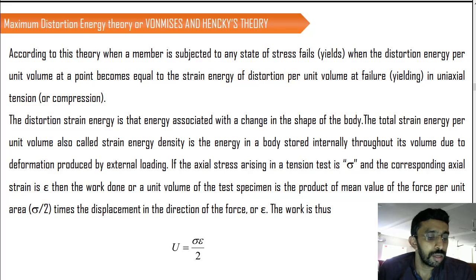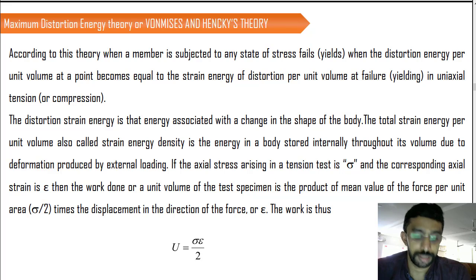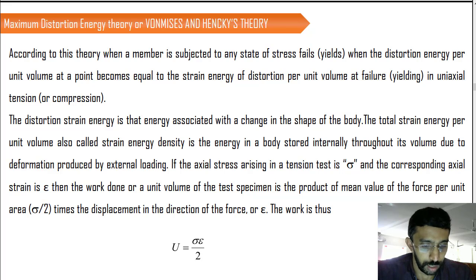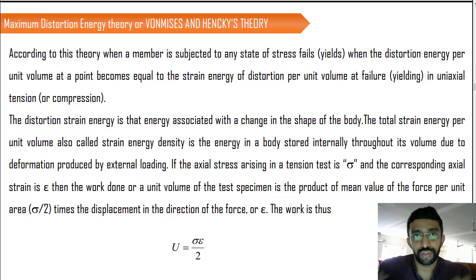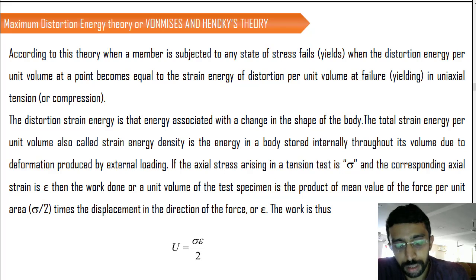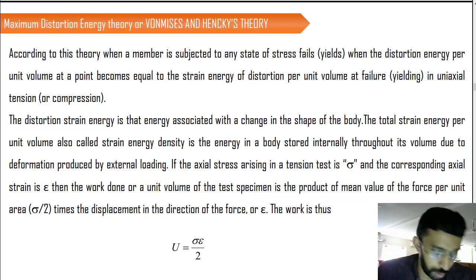We will discuss the last theory of failure, which is the Maximum Distortion Energy Theory, otherwise called von Mises and Henky's theory of failure. It is a very famous theory widely used in many applications. It is related to strain energy, but specifically points to the distortion happening in the material — that is, the change in shape — and how energy creates that change. We compare it with the distortion energy at the yield point.